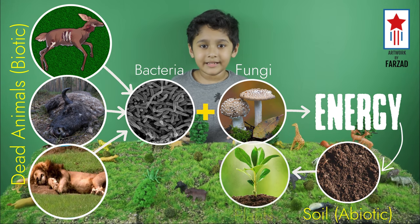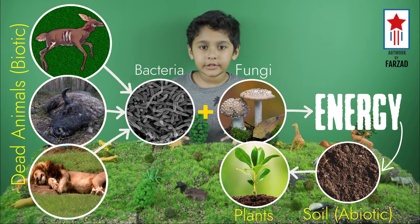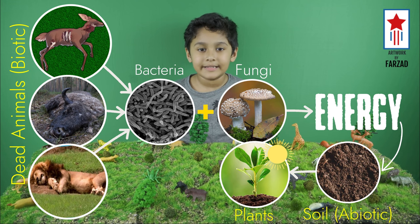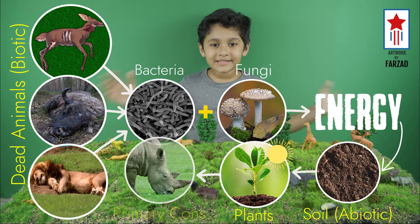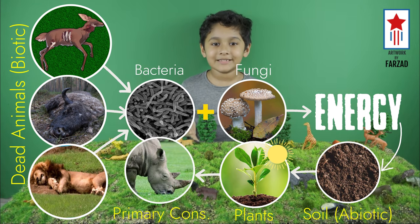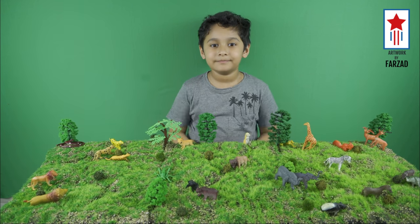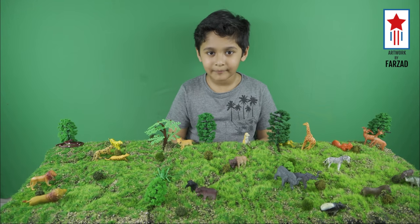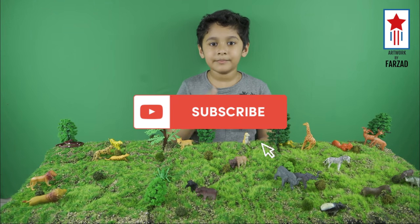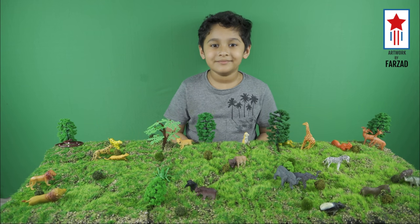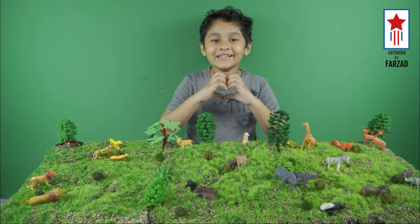Plants again get energy from the abiotic components like soil and sunlight. This is how the grassland ecosystem works. If you like my video, please subscribe to my channel. Love you all.